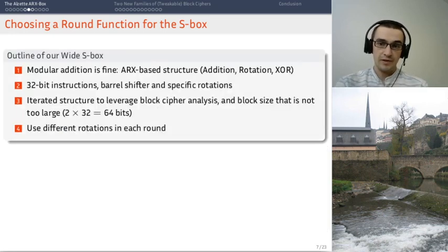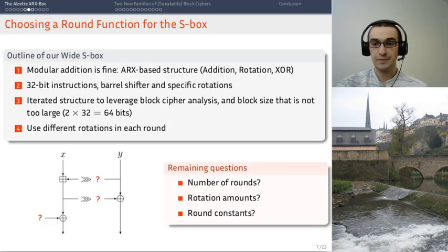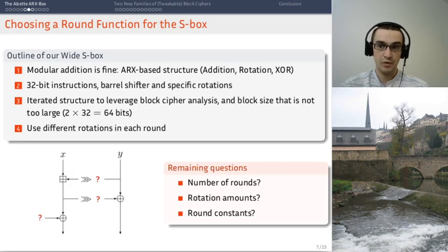So from this scope statement, we got an outline. And now from this outline, this is what we get. So something very simple with just three operations. An addition of a rotation, a XOR of a rotation, and the XOR of a round constant.